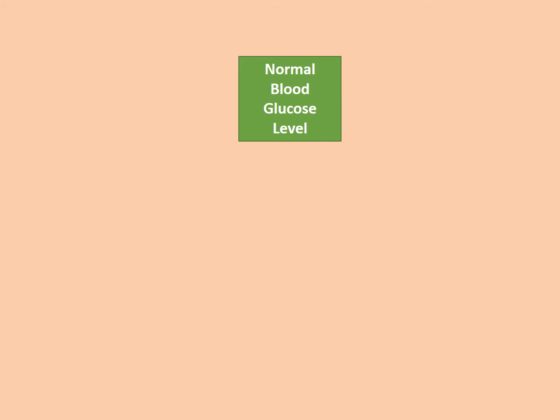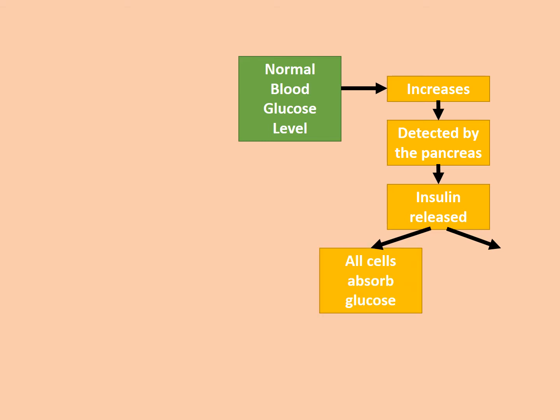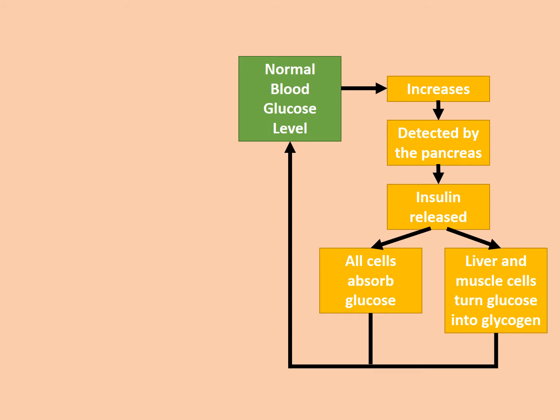If blood glucose level increases, that is detected by the pancreas, which releases insulin. Insulin travels in the blood around the body, causing all cells to absorb glucose; specifically, liver and muscle cells take up glucose and turn it into the storage molecule glycogen. Blood glucose level then decreases, returning to normal, which switches off insulin production — an example of negative feedback.